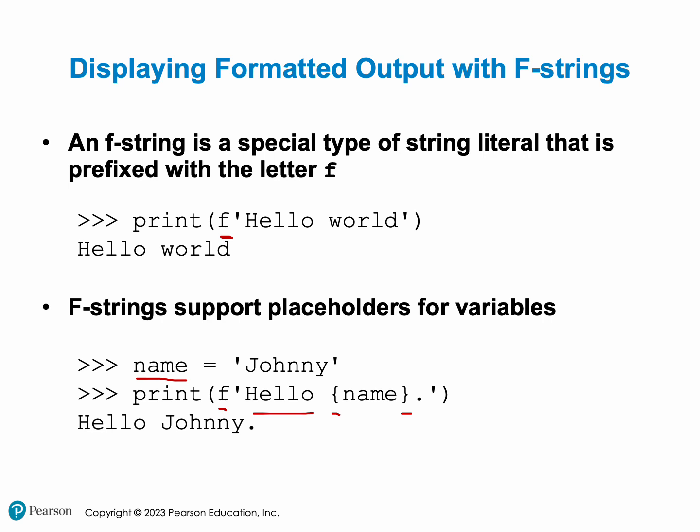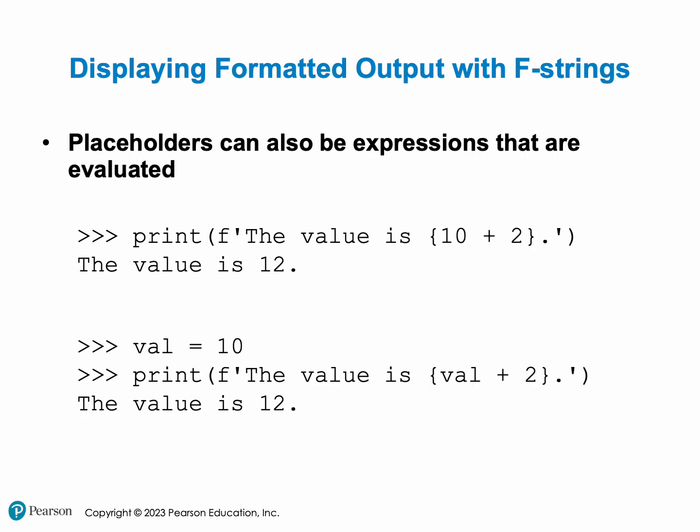However, if 'name' was assigned to any other word — for example 'sonia' — it would produce 'hello sonia' instead. Anything inside of the curly braces we call placeholders. Placeholders can also have expressions inside of them that are going to be evaluated. For example, inside the curly braces we have '10 plus 2', and it prints 12 instead of '10 plus 2' because it evaluates the expression. The same thing works with variables — 'val' is assigned 10, and we add 2 to it, producing the same output.